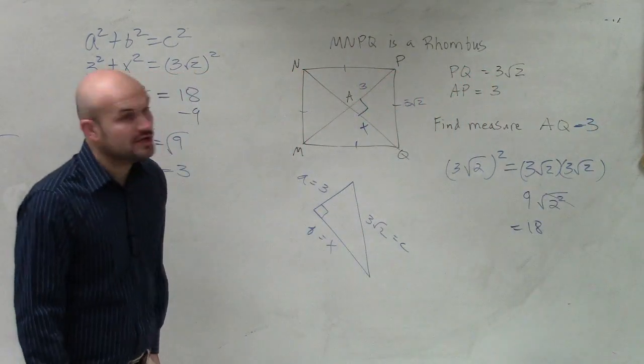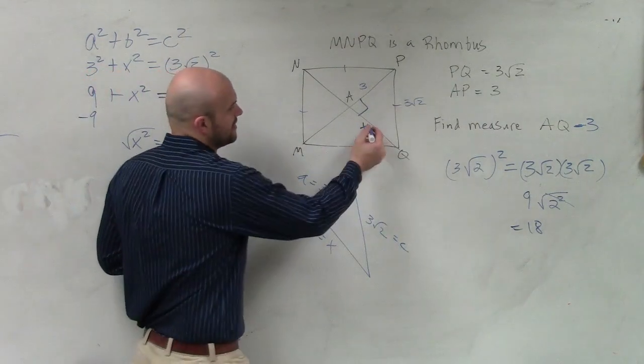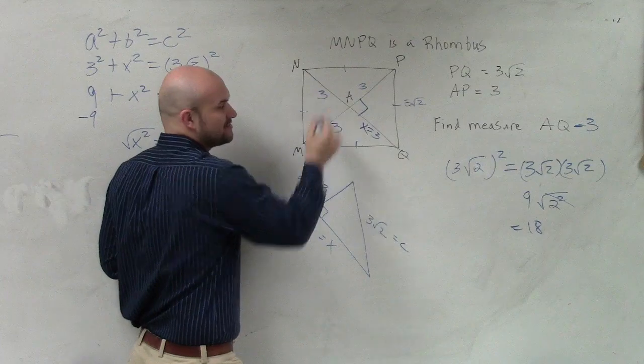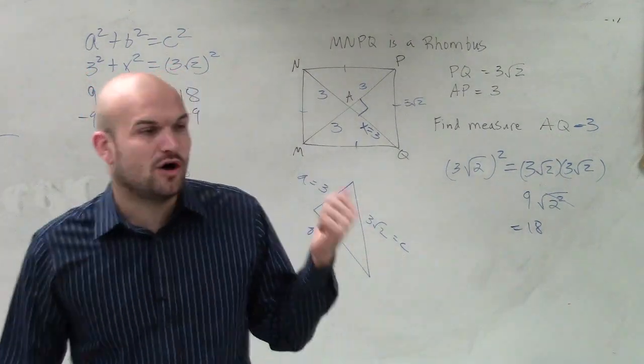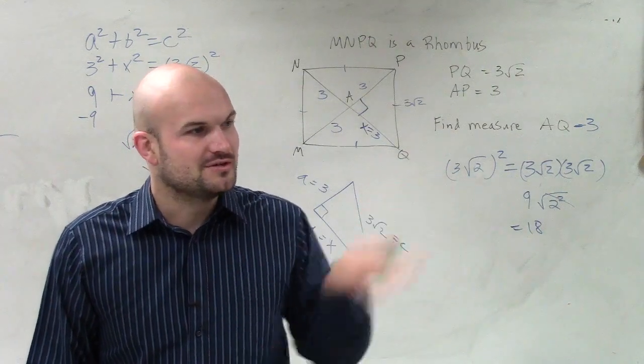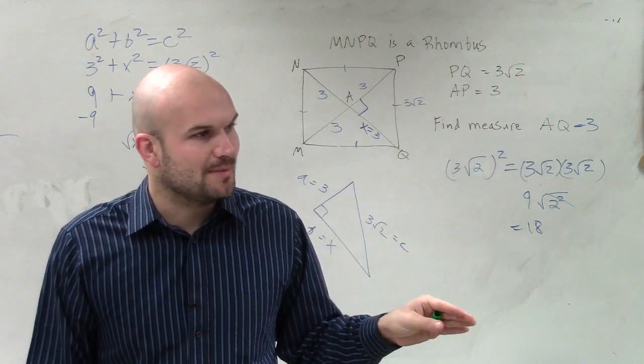And then if we know that these two are 3, if I know that that's equal to 3, then I know that's 3, and that's 3. This isn't part of the problem, guys. But if all the diagonals are equal in measurement, then what do we have? If my two diagonals are equal in measurement, and it's a rhombus, then it's a?